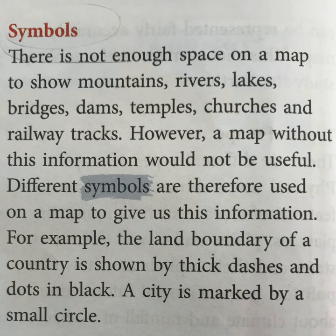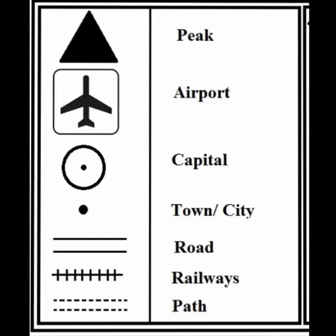Symbols are basically small marks or simple drawings used to show places on a map. For example, to show a mountain peak we use a symbol that is triangular in shape. To show an airport we draw the picture of an aeroplane on the map.